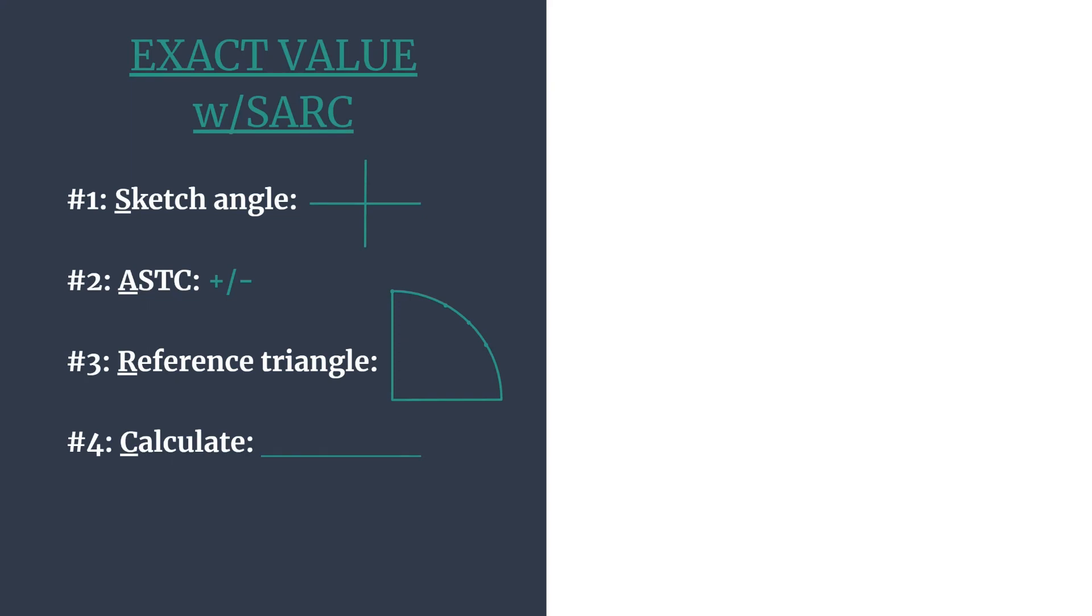Breaking it down before we get started, S stands for sketch the angle, so we really just care about the terminal side. A stands for ASTC, another acronym to help you know which trig functions are positive in each quadrant. R stands for reference triangle, so we'll get the reference angle and then the triangle and coordinates that go with that. And C stands for calculate.